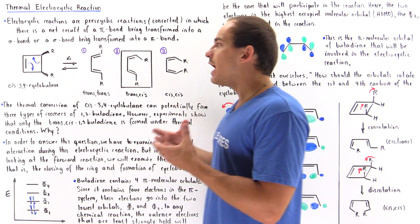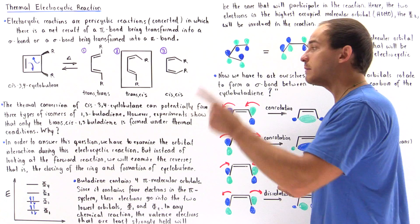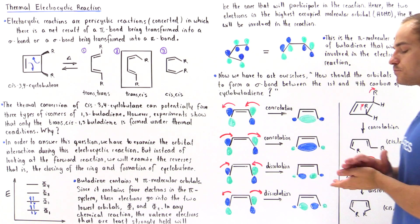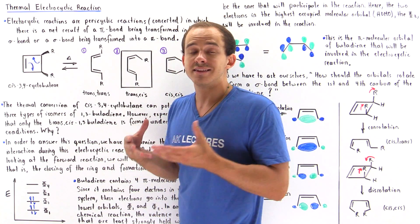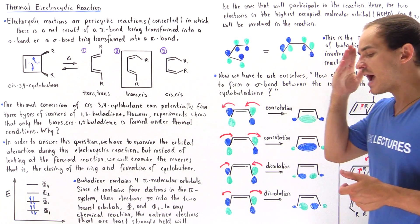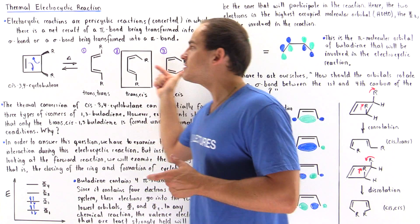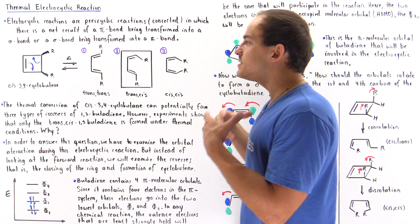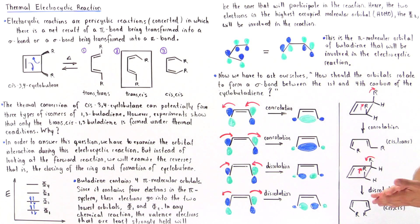The question is why. Why is there this preference under thermal conditions for cis-3,4-cyclobutene to transform specifically into the trans-cis or cis-trans isomer of butadiene? To answer this question, we have to examine the orbital interactions during this thermal electrocyclic reaction. Instead of focusing on the forward reaction, it will be easier to focus on the reverse reaction. The same result applies when going in either direction, as we'll see toward the end of this lecture.